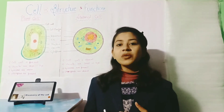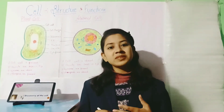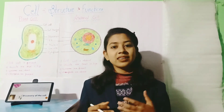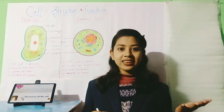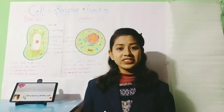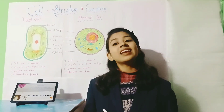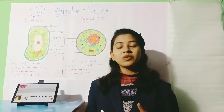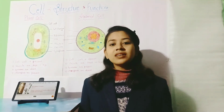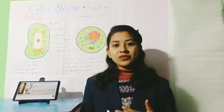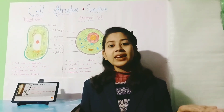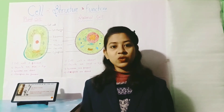Now moving to the discovery of cell. Who discovered the cell? Cell was discovered by Robert Hooke in 1665. As you see in this slide, he discovered the cell on a section of cork using his self-made microscope.